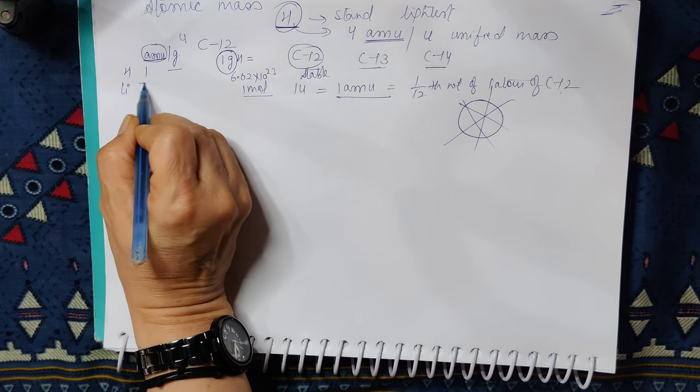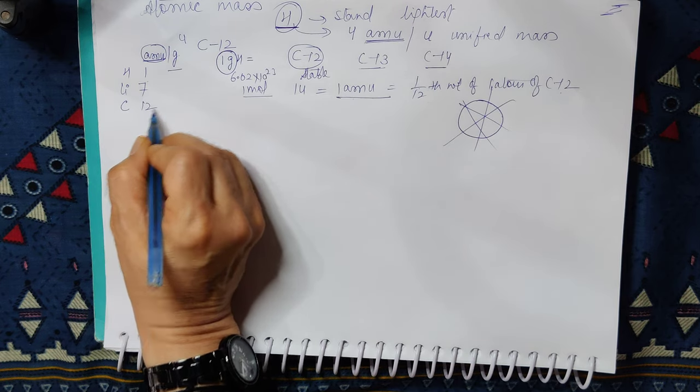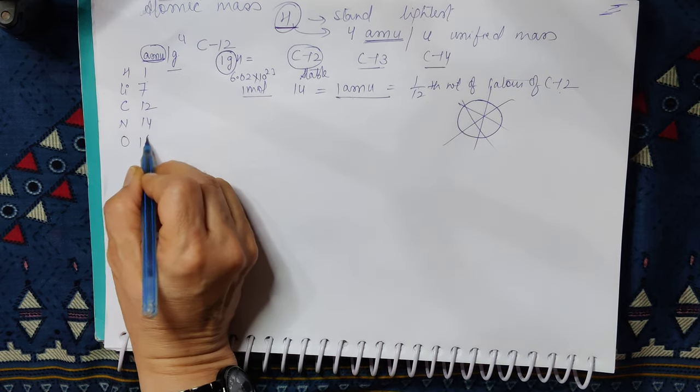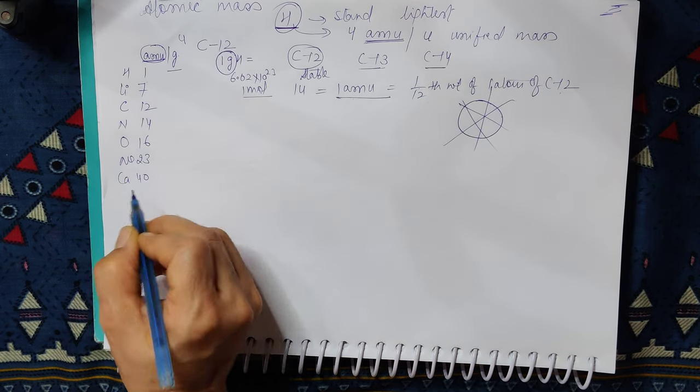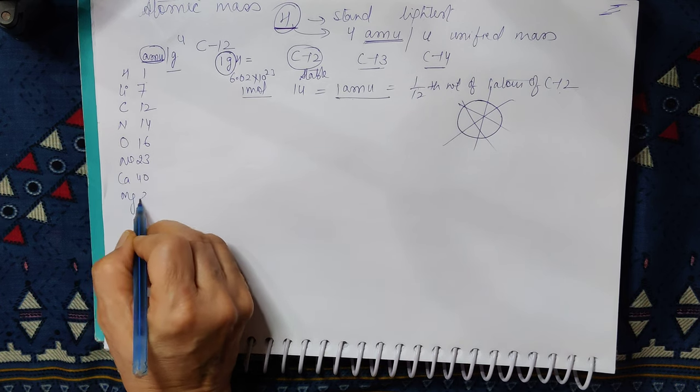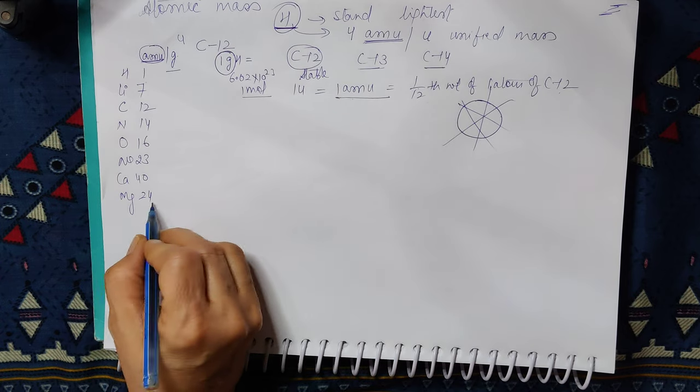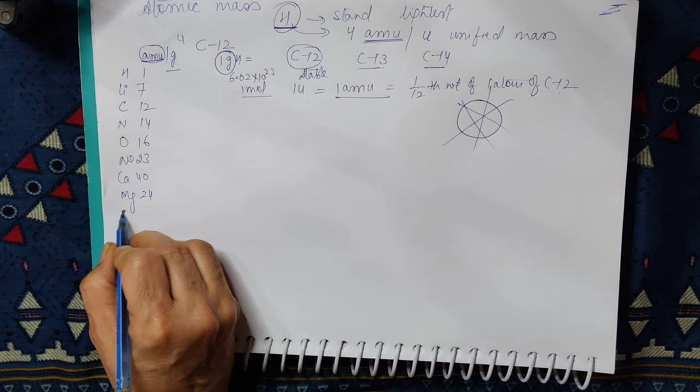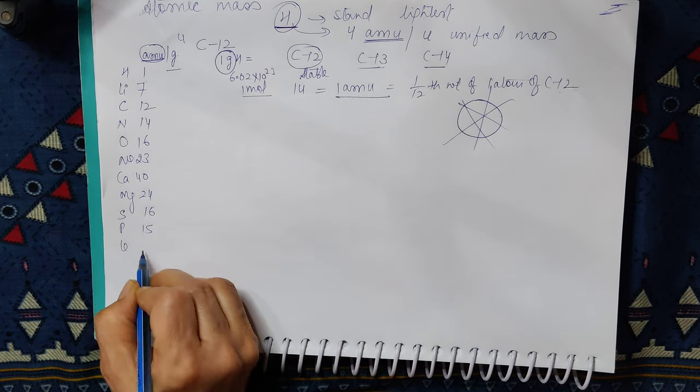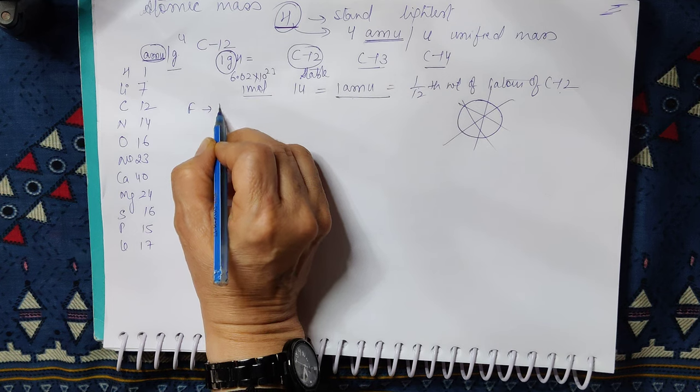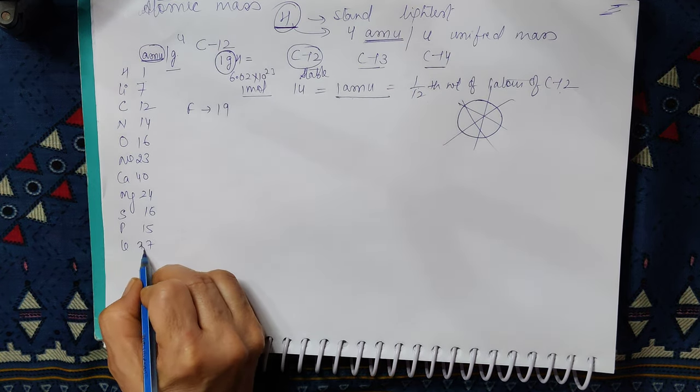Hydrogen is 1, Lithium is 7. This is important. Carbon is 12, Nitrogen is 14, Oxygen is 16, Sodium is 23, Calcium is 40. At random, I am writing down. Magnesium is 24. You have to learn this, you have to learn more. Sulfur is 16, Phosphorus is 15, Chlorine is 17, Fluorine is 19. This is his atomic number, I have written 35.